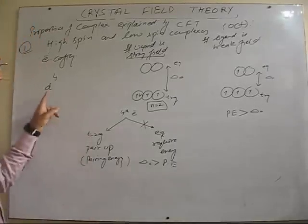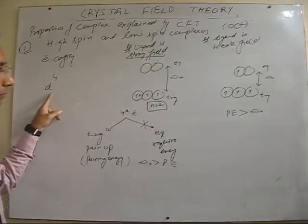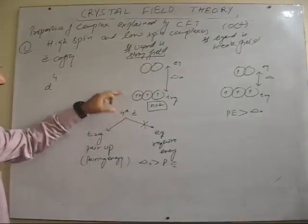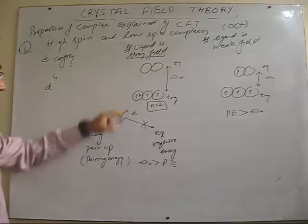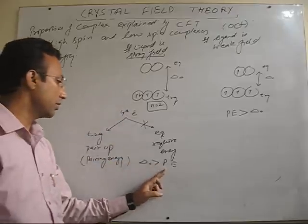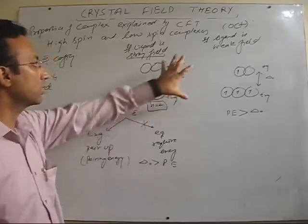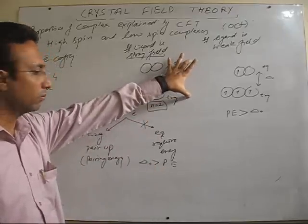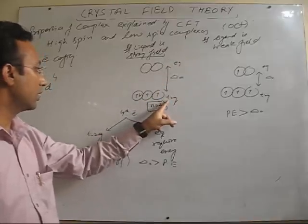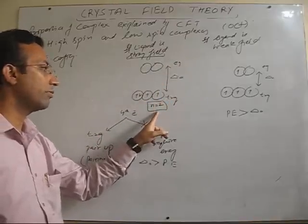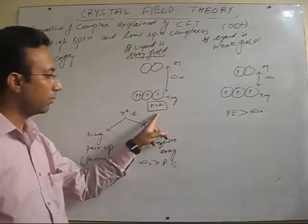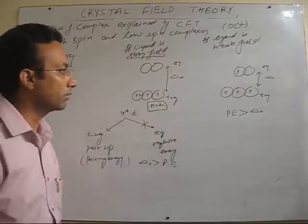Now let's continue this. We have observed in case of D4, there are two cases. In the first case, I have already explained to you that pairing energy is less than delta naught because it is strong field ligand, this gap is more. So electrons are paired up and number of unpaired electrons is 2. So its magnetic behavior is according to two unpaired electrons.